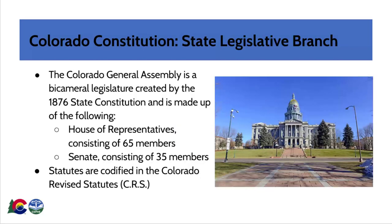The Colorado General Assembly is a bicameral legislature created by the 1876 State Constitution and is made up of the House of Representatives, consisting of 65 members, and the Senate, consisting of 35 members. Statutes are codified in the Colorado Revised Statutes, known as the CRS. On the screen, we can see the Colorado State Capitol Building, which is the home of the Colorado General Assembly in Denver.